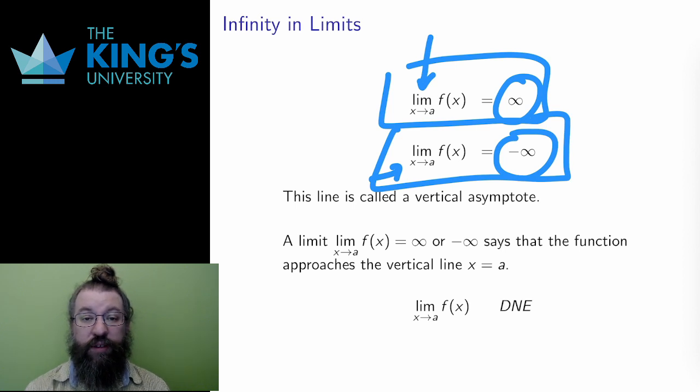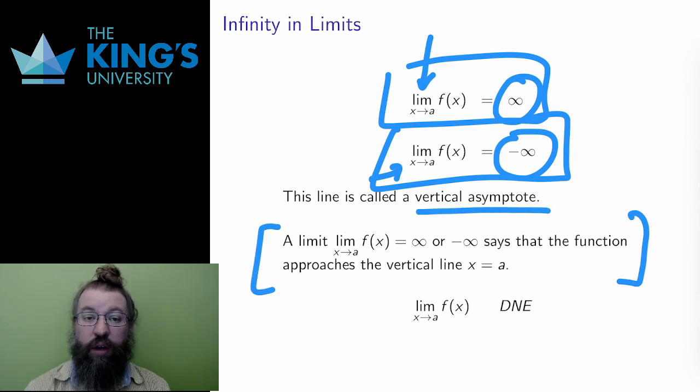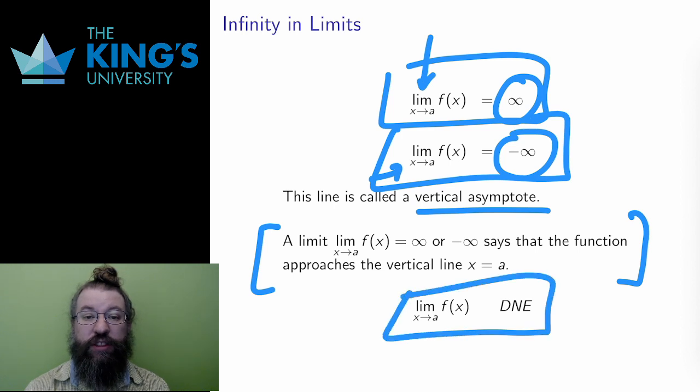In both of these cases, as I'll show shortly in a diagram, the graph of the function gets very close to a vertical line. This line is called a vertical asymptote. Finally, there are other ways that a limit can fail. I'll show some of these examples later. When a limit fails, I'll just write DNE, which stands for does not exist.